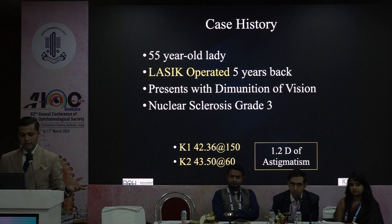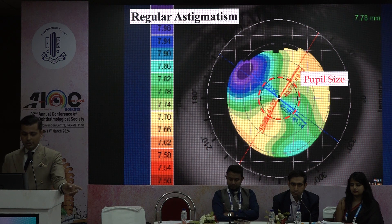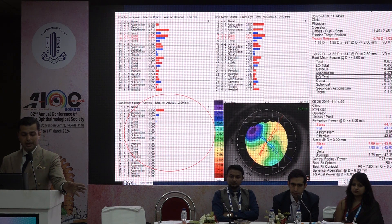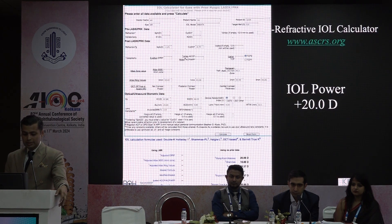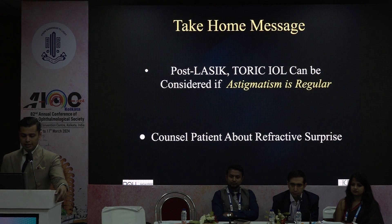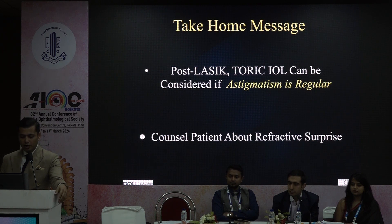Case 1: a 55-year-old ophthalmologist presenting late after LASIK. The astigmatism within the pupillary area was regular, and the aberration profile showed the cornea was pristine — aberrations were coming from inside the eye, not the cornea. We calculated using the ASCRS post-refractive surgery calculator and implanted a 21-diopter lens. The patient is very happy with the toric lens. Key takeaway: if astigmatism is regular on topography, a toric IOL is a straightforward choice, as modern LASIK doesn't significantly distort corneal shape.